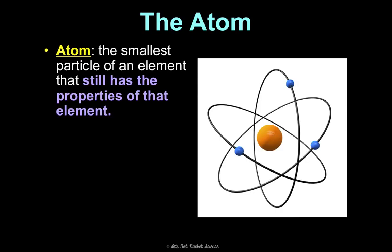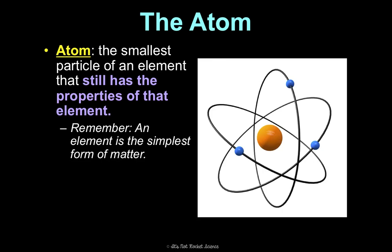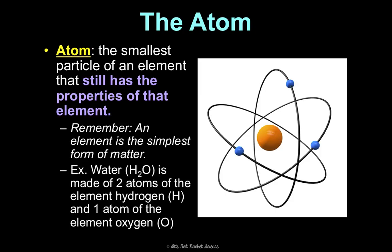So first, let's talk about what an atom is. An atom is the smallest particle of an element that still has the properties of that element. Remember from our last unit that an element is the simplest form of matter. Think about a compound like water, which is H2O. It is made of two atoms of the element hydrogen and one atom of the element oxygen. That's kind of how we use this language of atom and element together.